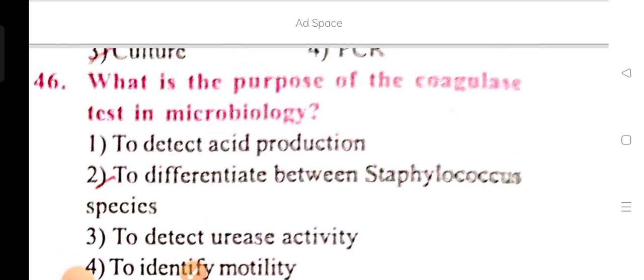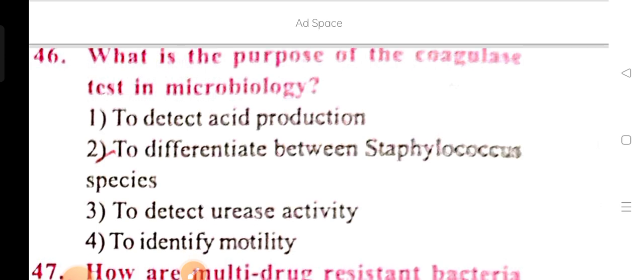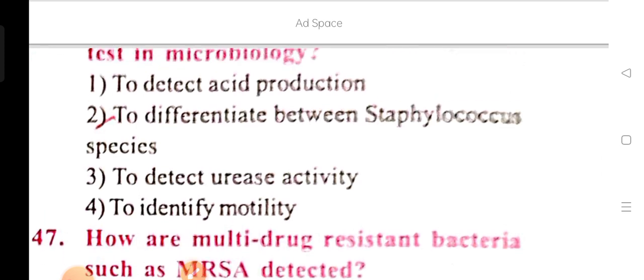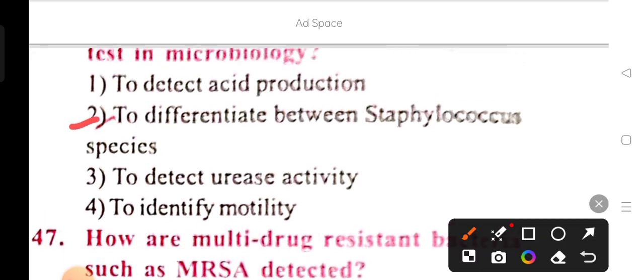What is the purpose of the coagulase test in microbiology? Options are: detect acid production, differentiate between Staphylococcus species, detect urease activity, and identify motility. Option 2 is the correct answer: to differentiate between Staphylococcus species.